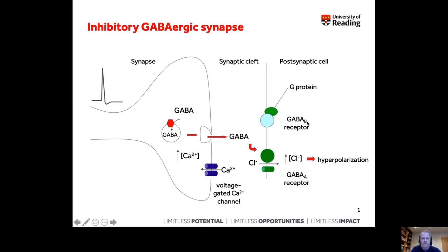These ones are called GABA-B receptors. Hopefully you can see that generally neurotransmitter release is very similar. The difference is dictated by action on the postsynaptic receptors. Here, these receptors are inhibitory rather than excitatory, and we'll describe in a little bit of detail and compare and contrast why these are inhibitory, as you can hopefully see from this slide already.